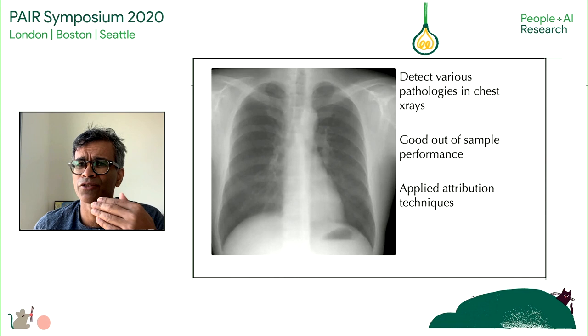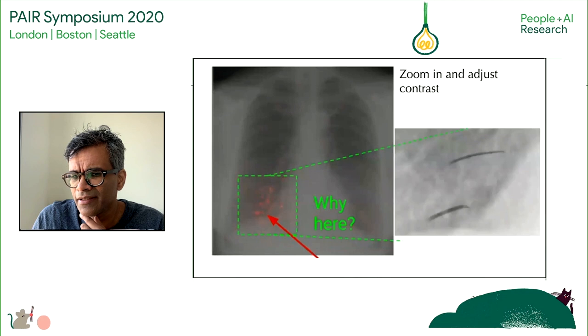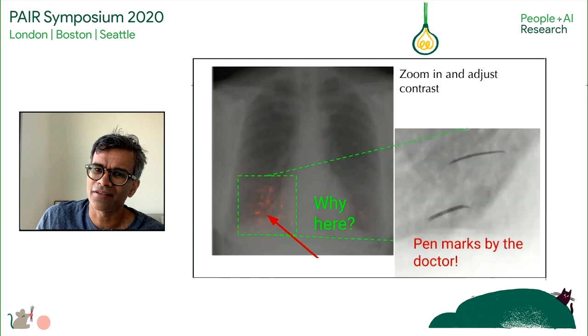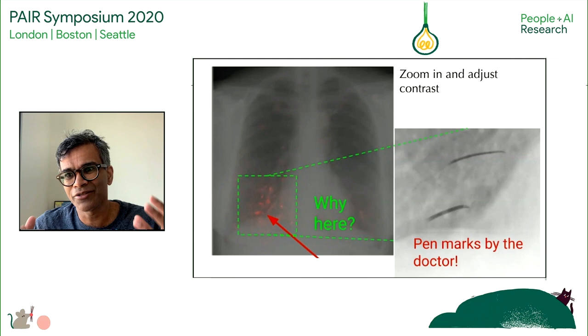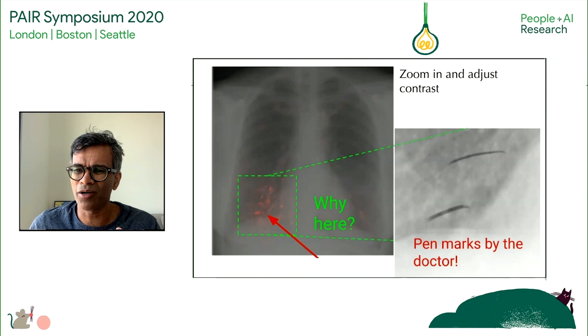In doing this, they zoomed in on where the algorithm was picking up signal on an X-ray and adjusted the contrast, and realized: that doesn't look like part of the lung. It turned out to be pen marks by the doctor. Radiologists, when they looked at an X-ray and saw something, put a pen mark on it — so the algorithm learned to find pen marks. What they thought was a pathology detector was actually a pen mark detector. You can't deploy an algorithm that is a pen mark detector and call it a pathology detector. This is the kind of problem we worry about when training ML algorithms: instead of picking up the signal we want, it picks up some artifact of the data set — a confounder. This is why we have interpretability techniques.